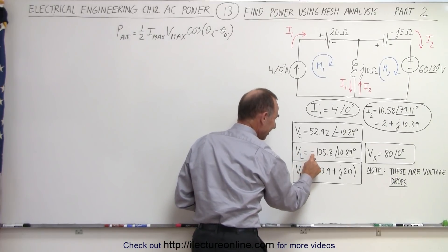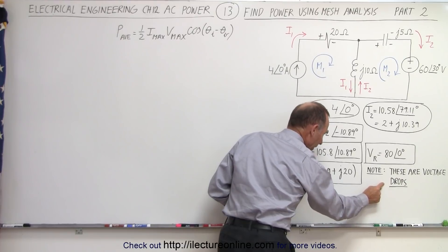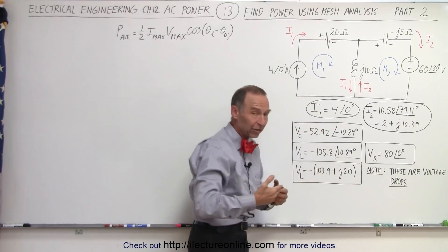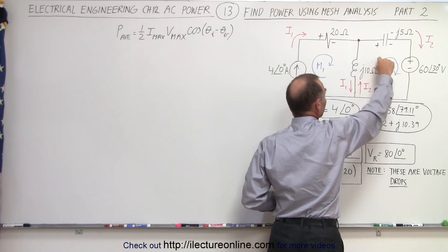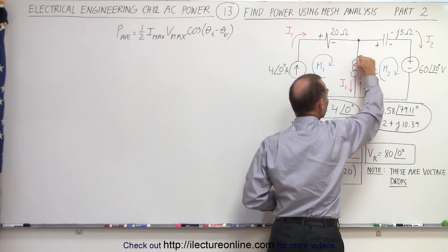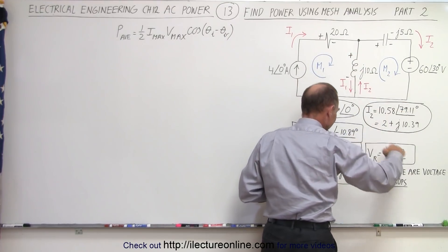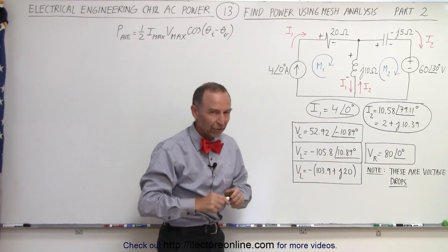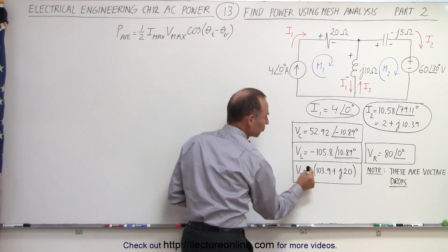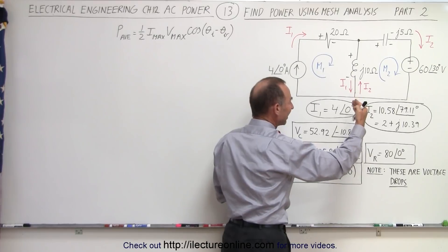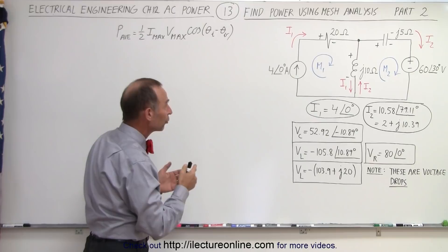Notice that the voltage across the inductor has a negative value. But since that's presumed to be a drop, a negative drop is actually a rise. So when we go across the inductor in this direction according to mesh two, from here to here, we have a voltage rise. That means this is the negative end and the positive end, as indicated by these results. These are all voltage drops, but a negative voltage drop is actually a voltage rise.